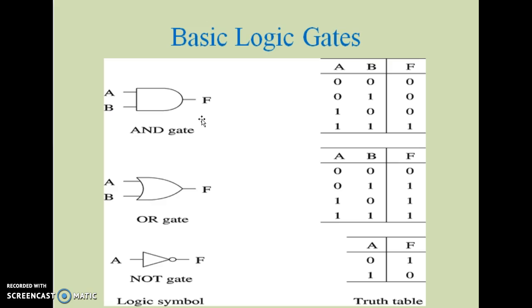Basic logic gates are of three types: AND gate, OR gate, and NOT gate. The logic symbols are as shown and the operation is tabulated in the truth table form.